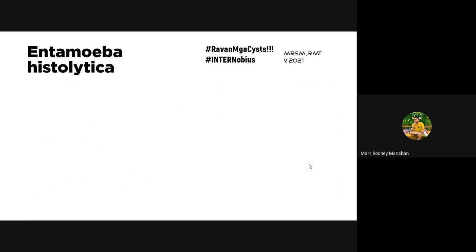The most common site of extra-intestinal amoebiasis is the liver. For diagnosis, the first method is the standard O&P (ova and parasite) examination — direct fecal smear, concentration techniques, and permanent stain smears — recommended especially for patients with intestinal amoebiasis.